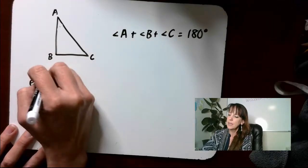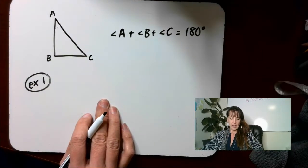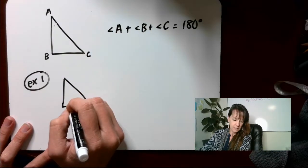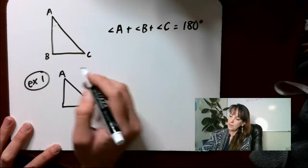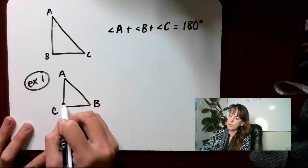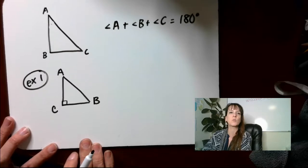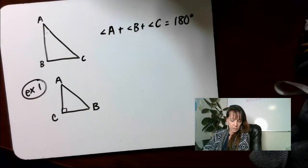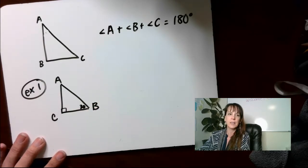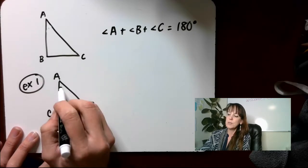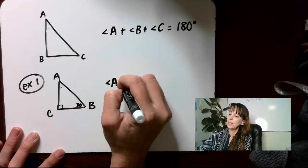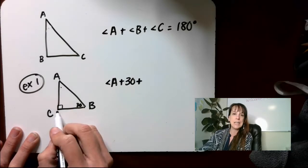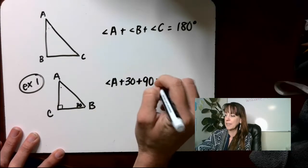So for example, number one, we have a triangle that looks like this — A, B, and C. We are told that angle C is a right angle — if you see that little square, that's saying it's a right angle. We also know that angle B is 30 degrees. What we don't know is angle A. So angle A plus angle B (30 degrees) plus angle C (90 degrees) added up will give us 180.